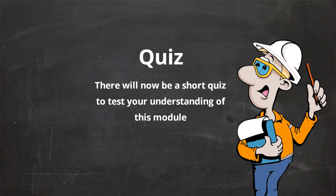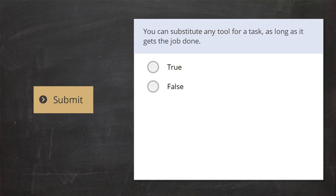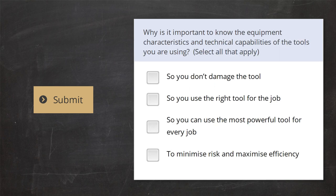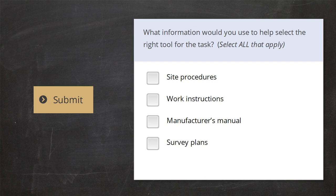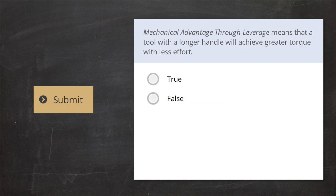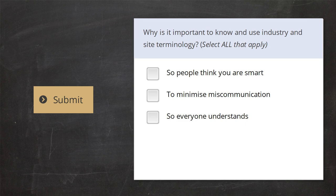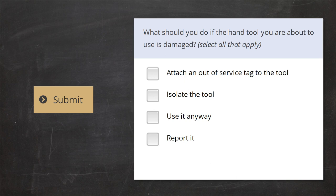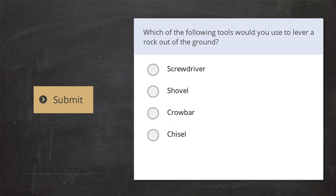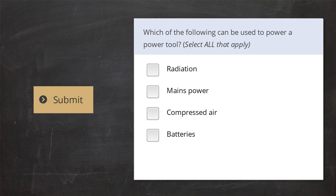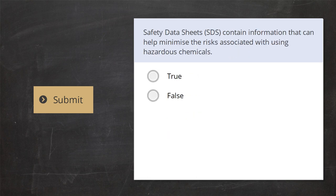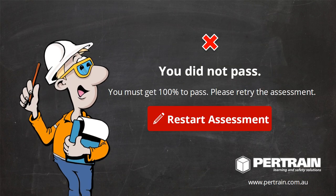There will now be a short quiz to test your understanding of this module. Questions include: whether you can substitute any tool for a task; why it is important to know the equipment characteristics and technical capabilities of tools; what information helps select the right tool; mechanical advantage through leverage; industry and site terminology; what to do if a hand tool is damaged; which tool to use to lever a rock out of the ground; which tool creates a flat consistent surface on timber; what can power a power tool; and whether safety data sheets help minimize risks associated with hazardous chemicals. You must get 100% to pass this module.